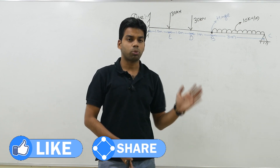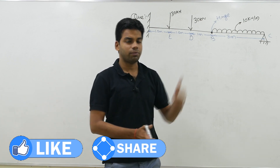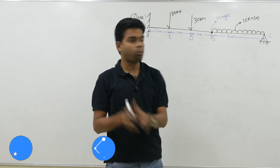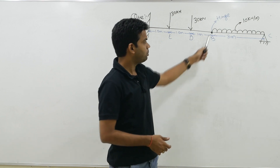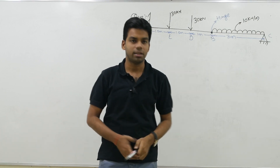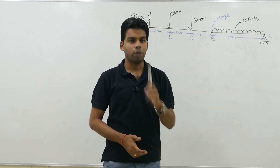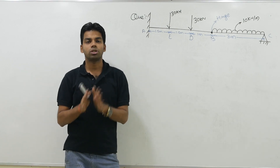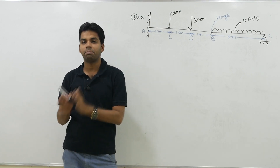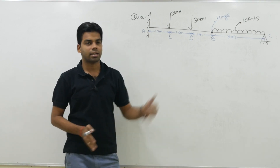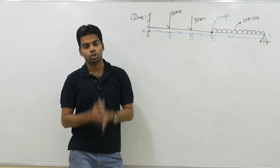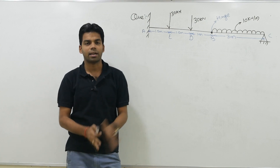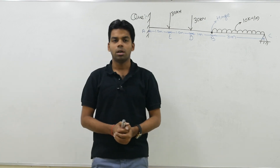You have a propped cantilever beam with the loading as shown in the figure, and at point B — very important — there is an internal hinge. You have to draw the shear force diagram and bending moment diagram for this particular beam.